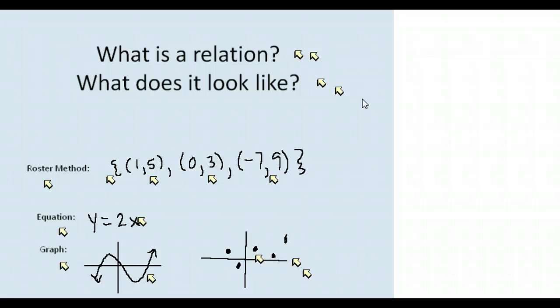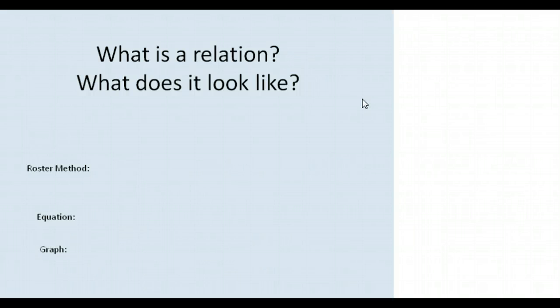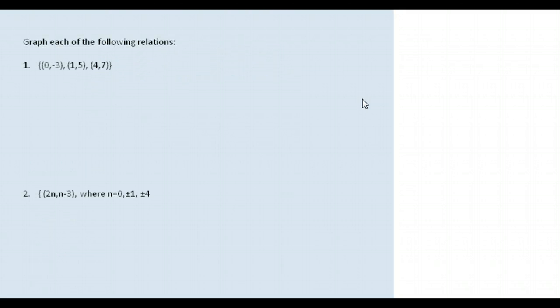So that is what relations are — just a relationship between X and Y — and it can look like many different things. It could be in the roster method where you just write down each of the points, it could be represented as an equation, or it can be represented as a graph. Let's practice with these and graph each of these relations.